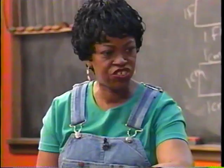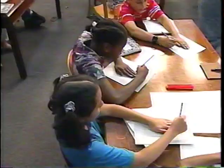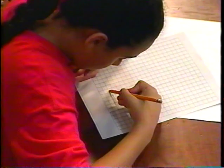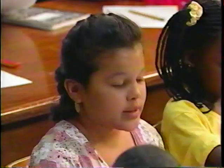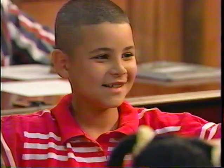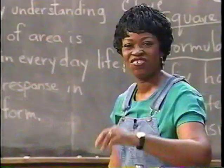I want you to trace your hand very quickly. After you trace your hand, give me the area of your hand. My area is 79 square centimeters. My hand is 98 square units. 112. 83 square centimeters. I have 78 square centimeters.